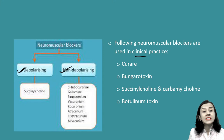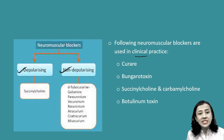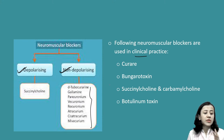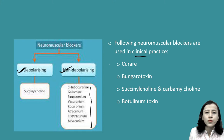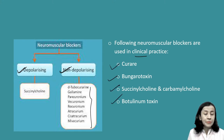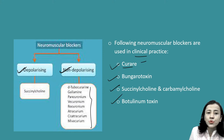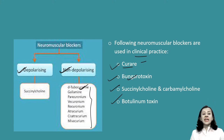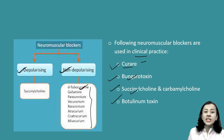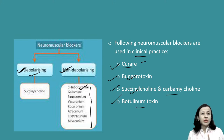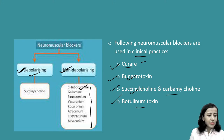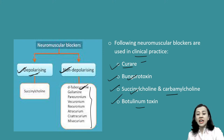The depolarizing blocker is succinylcholine. Non-depolarizing blockers are the others. If you have a short note, you just have to write about these four: curare or d-tubocurarine, bungarotoxin, succinylcholine (depolarizing blocker), carbamylcholine, and botulinum toxin. Try to remember all these names. We will discuss one by one, starting with curare.